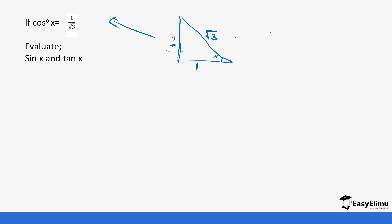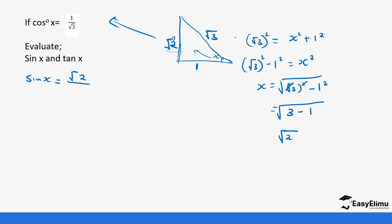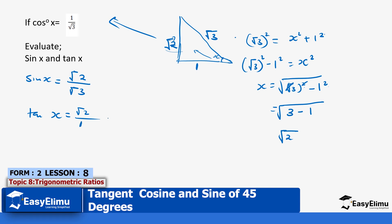We can get the opposite side by: root 3 squared equals x squared plus 1 squared. So x equals the square root of root 3 squared minus 1 squared. Root 3 squared: the root cancels with the square, leaving 3, minus 1 squared which is 1, so x equals root 2. Therefore sine of x is opposite — root 2 — over hypotenuse — root 3. And tan of x is opposite — root 2 — over adjacent — 1 — which gives us root 2.